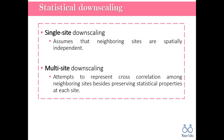Statistical downscaling can be categorized into two groups: single-site downscaling and multi-site downscaling. In single-site downscaling, we simply assume that neighboring sites are independent of each other to significantly streamline the downscaling process. However, this assumption is not valid most of the time as neighboring sites are strongly correlated and do not behave independently.